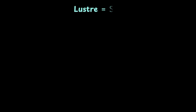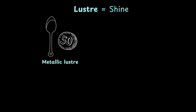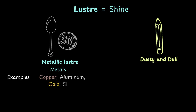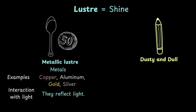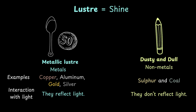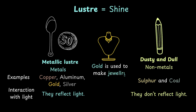First up, lustre. Lustre means shine. Pick up a steel spoon or a coin – look at how they sparkle. That shine is the metallic lustre. Now look at a graphite tip of your pencil. It's dusty and dull, and so are most non-metals. Bottom line, metals such as copper, aluminium, gold, and silver are usually lustrous as they reflect light. Non-metals such as sulphur and coal tend to be dull and dusty as they don't reflect light. And that's why we make jewelry out of gold and not charcoal.